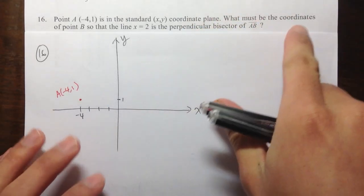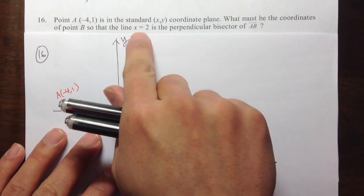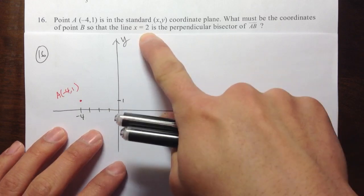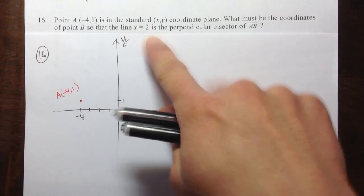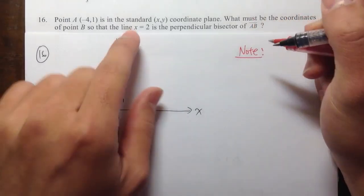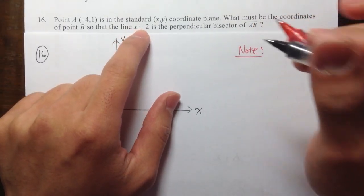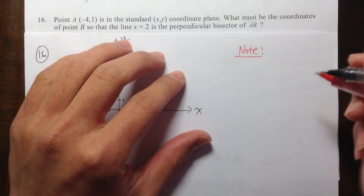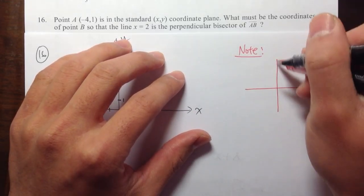Okay, and what else do we have? It says we have a line, x is equal to 2. We also need to draw that line first. Let me make some notes on the side, because x equals a constant is a special line. So let me give you guys an idea.